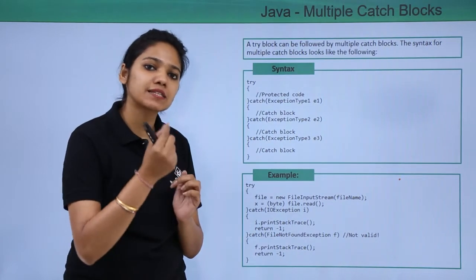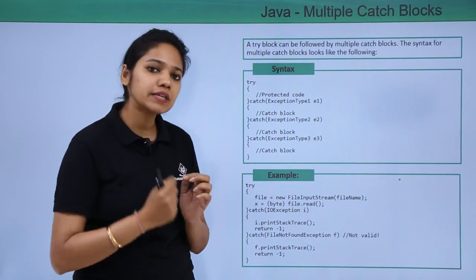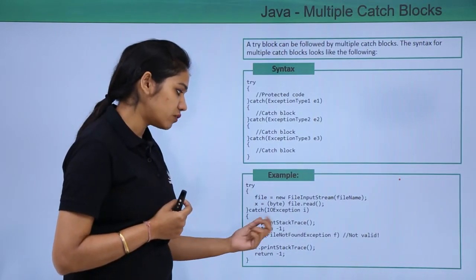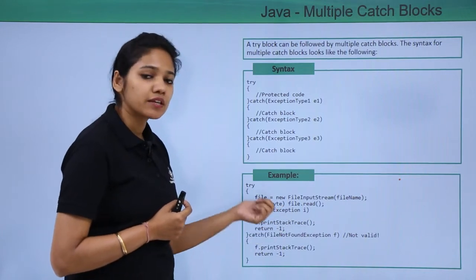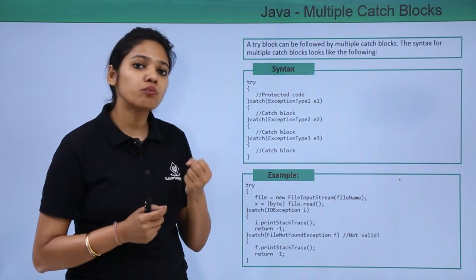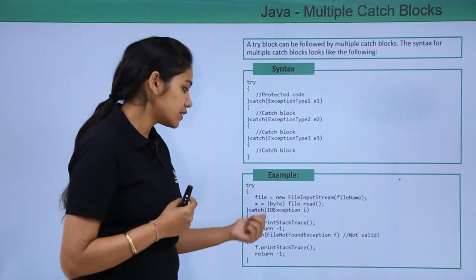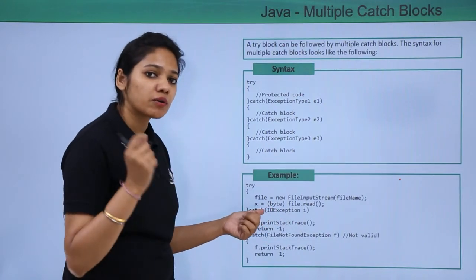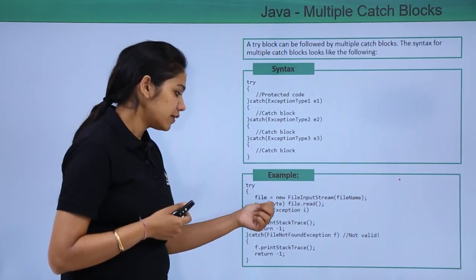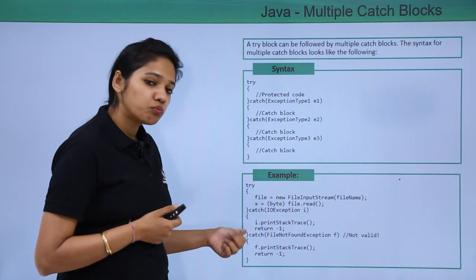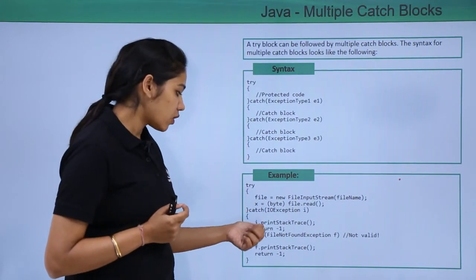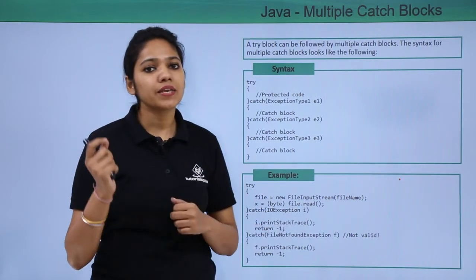How do you define multiple catch blocks after one try block? After the try block, we write the catch keyword and then the kind of exception — this is an exception class which is a type of your Throwable class. All exceptions are instantiated from your Throwable class. So under the IOException catch block, we print what kind of exception it is.